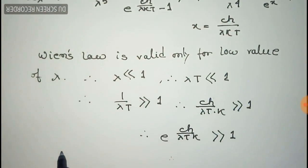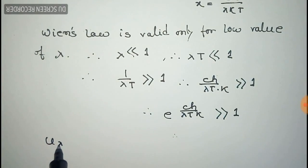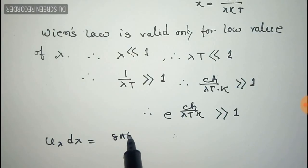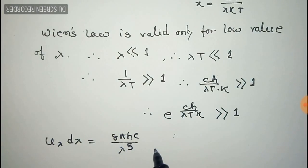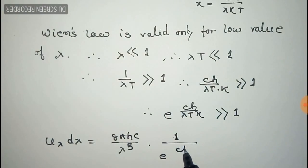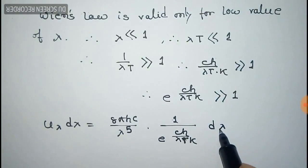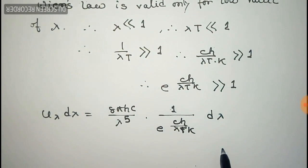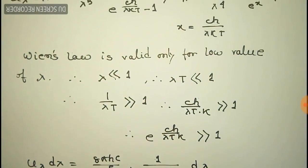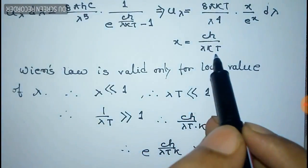Since the exponential is very much greater than 1, we can neglect the minus 1 from the denominator. We can then rewrite Planck's law as 8πhc by λ to the power 5, into 1 by e to the power hc/λkT, times dλ.